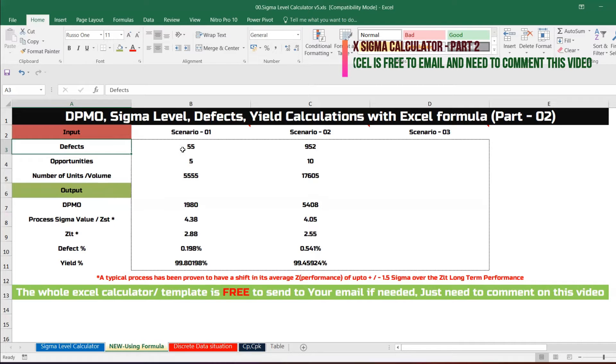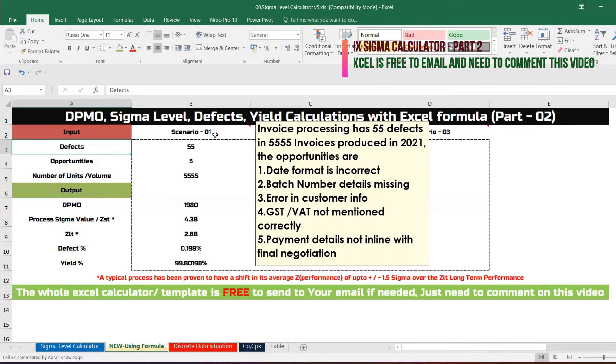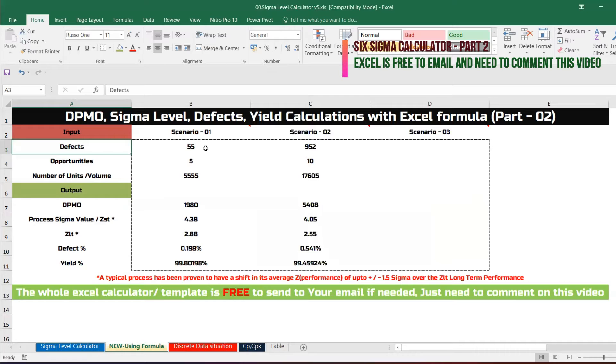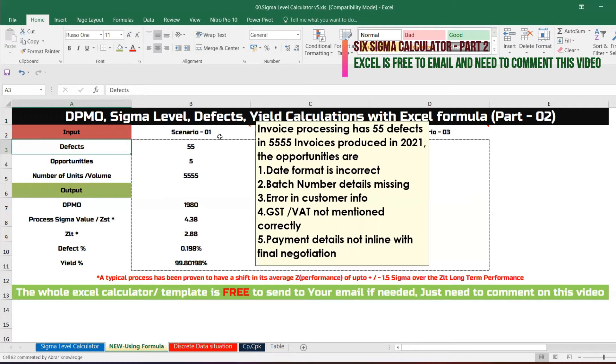We are going to discuss three scenarios. Number one: the invoice processing has 255 defects in 5555 invoices produced in 2021. The opportunities are: date format is incorrect, batch number details missing, error in customer info, GST or VAT not mentioned correctly, payment detail not in line with the final negotiation.